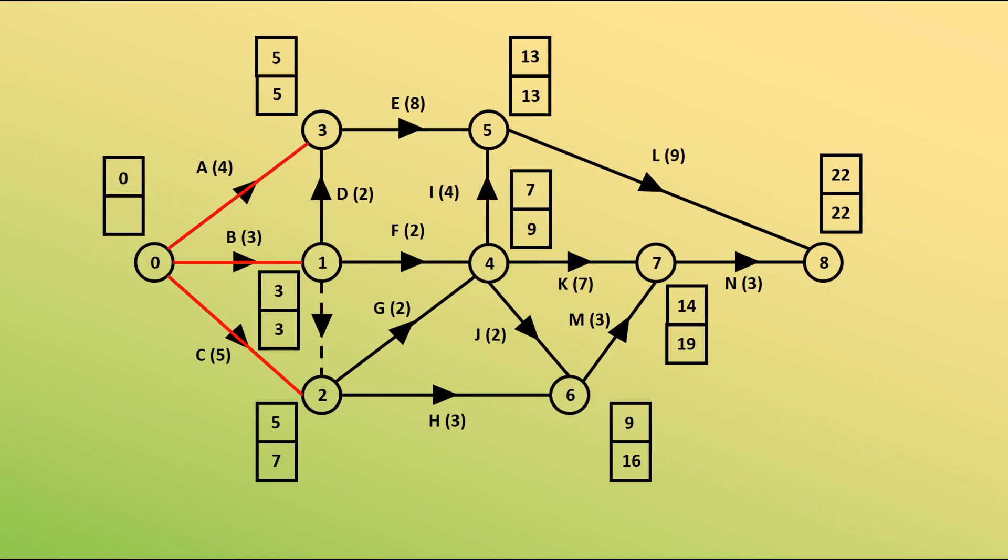Node 0 has 3 coming out of it. Going down a, b, c, we've got 5 take away 4 is 1. 3 take away 3 is 0. And 7 take away 5 is 2. Of course, the lowest of those is 0, which is what we expected. So we've completed our backwards pass, and we've now got the early and late event times for each of those events.